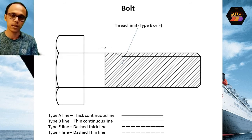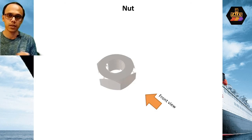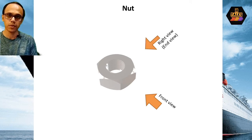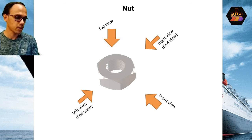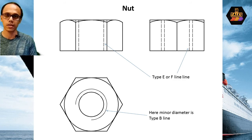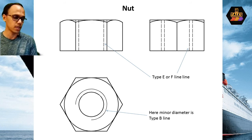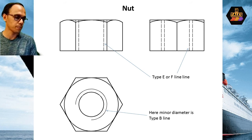Thread limit line is type E or F line. In the nut case, we will explain here. This is the front view. Then there is the right side view or end view. Then there is the left side view — also an end view — and there is a top view. This is hexagonal with three views: top view, front view, and side view. Left side view and right side view are the same. This is the right side view. Here is the front view — hexagonal five views on the front view.